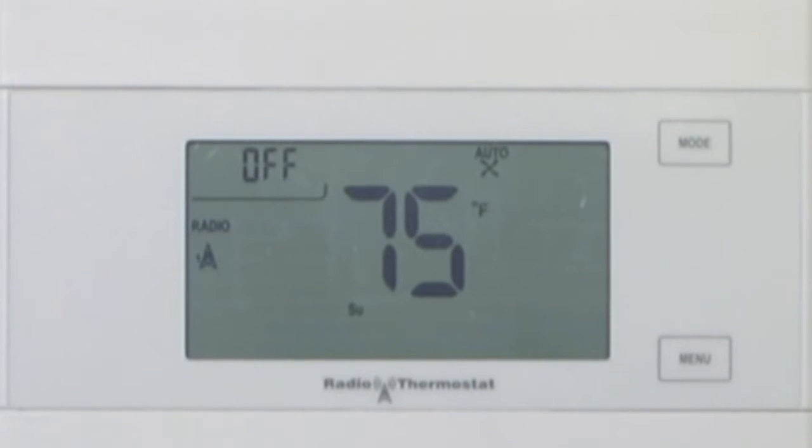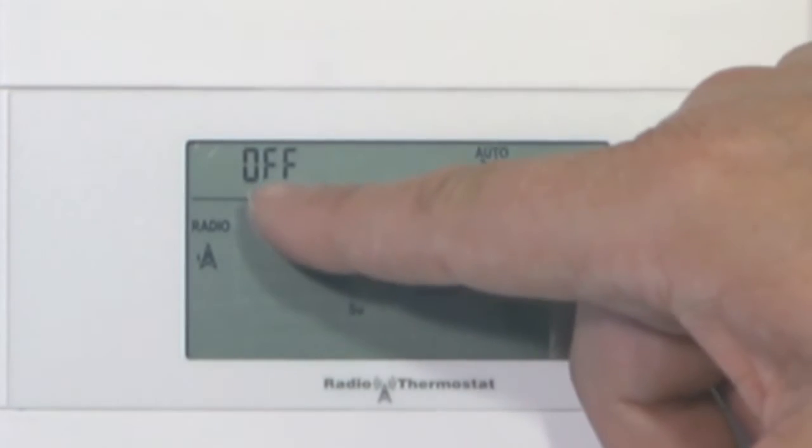On the CT110 to set up the HVAC type or what type of heating and cooling you have, there's a neat little way of doing it. Basically, you turn the mode to off.